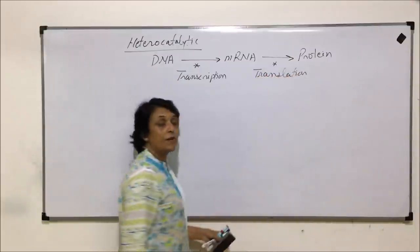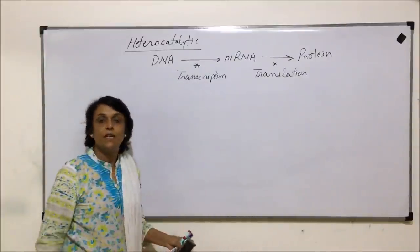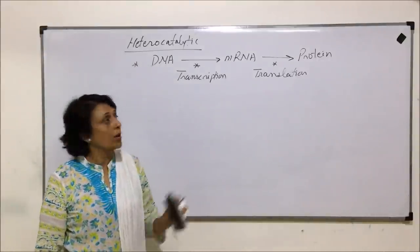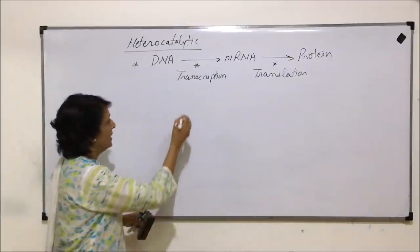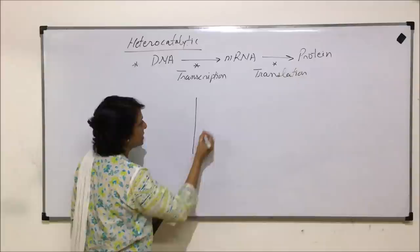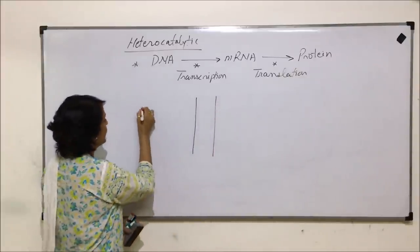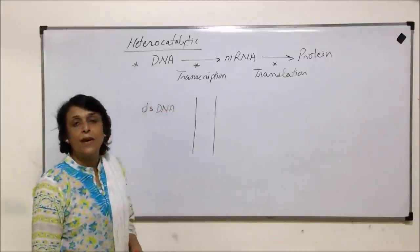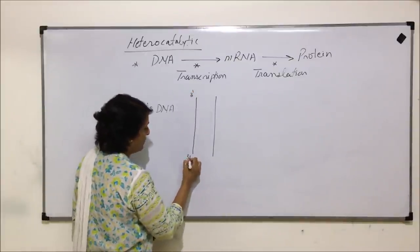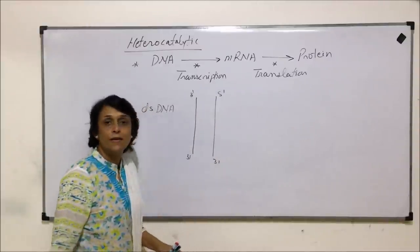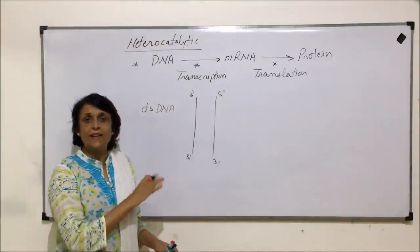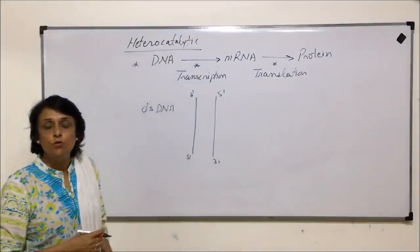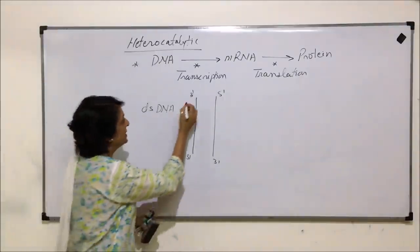We will first discuss transcription and then translation. Let us first see what we call the DNA strands and the reasons for naming them. This is the double-stranded DNA — DS DNA means double stranded normal DNA — with 3 prime and 5 prime ends. The two strands are antiparallel and we will write down the nucleotide sequence on these two to understand which one will be used as the DNA template.